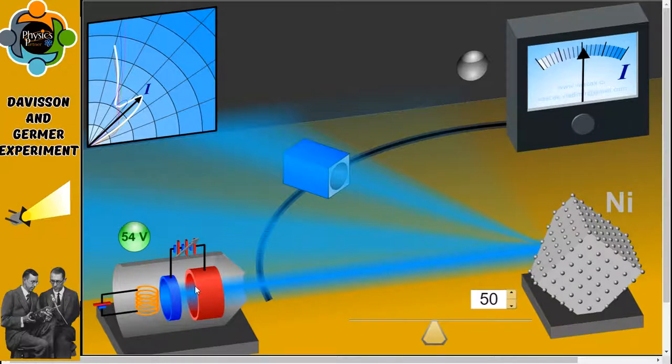These emitted electrons were made to pass through a cylinder perforated with fine holes along its axis, thus producing a fine collimated beam. This beam produced from the cylinder is made to fall on the surface of a nickel crystal, as you can see here.